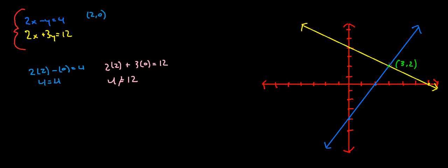The numbers that are true for both equations will be found at the point where both lines intersect. Any point on the blue line is a correct solution for the first equation, and any point on the yellow line is a correct solution for the second equation. So where they both intersect, both statements will be true simultaneously. That point is (3, 2), which I found by graphing. Graphing is a valid way of finding a solution to linear equations, though usually the graphs won't yield such clean whole-number answers. Both lines intersect at (3, 2), so (3, 2) is a solution for both equations.